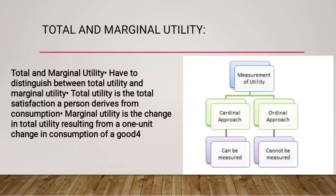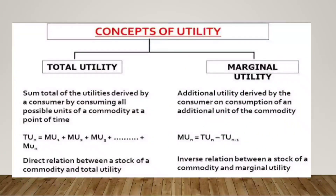Utility is of two types: one is cardinal utility and the other is ordinal utility. Cardinal utility can be measured and is quantitative, while ordinal utility cannot be measured and is qualitative. These concepts of utility are a very important question for your two marks or four marks. The sum total of utility derived by a consumer by consuming all possible units of a commodity at a point of time is called total utility.